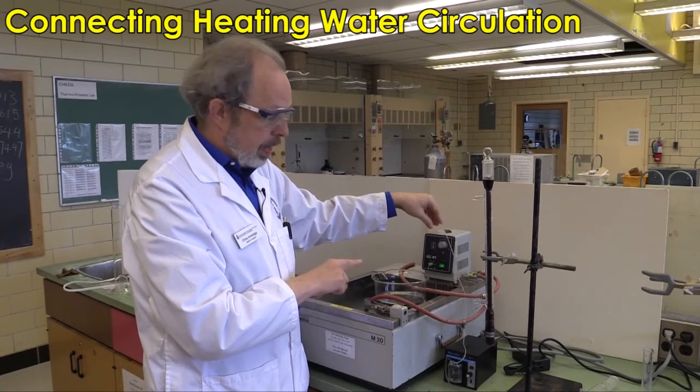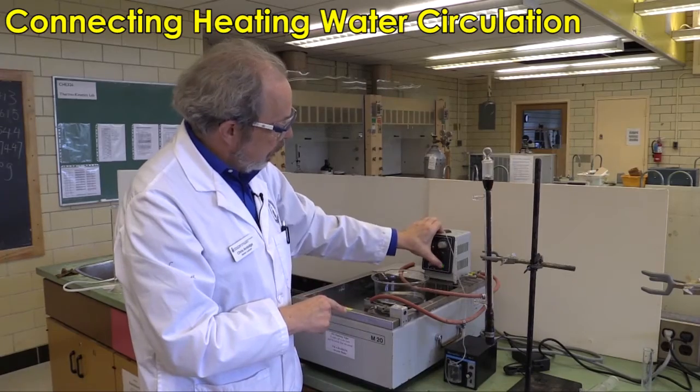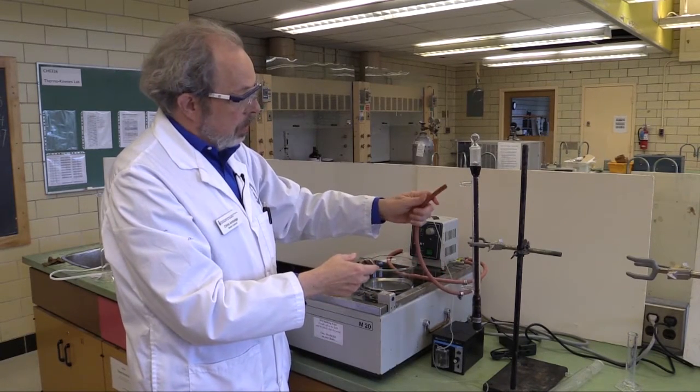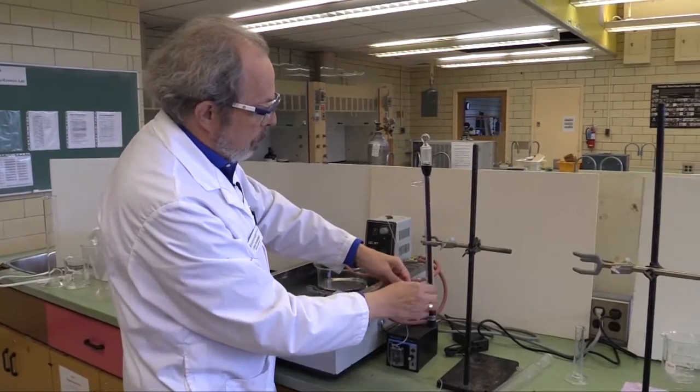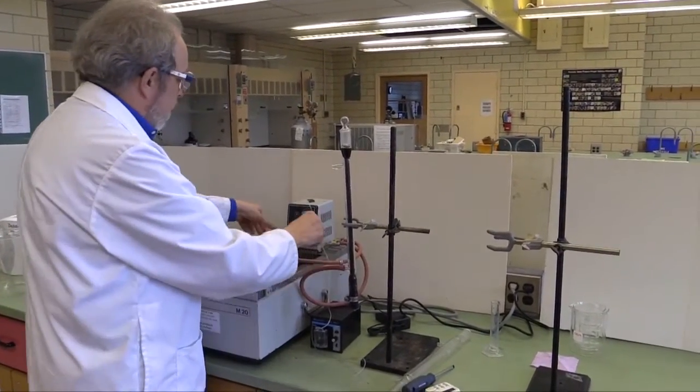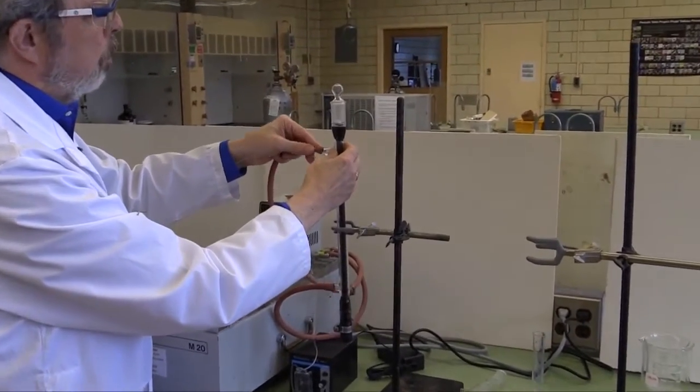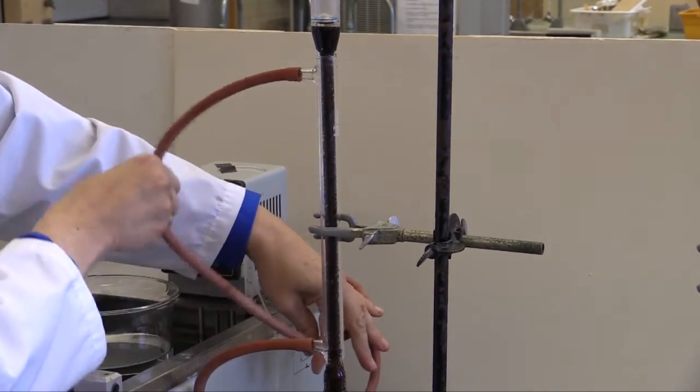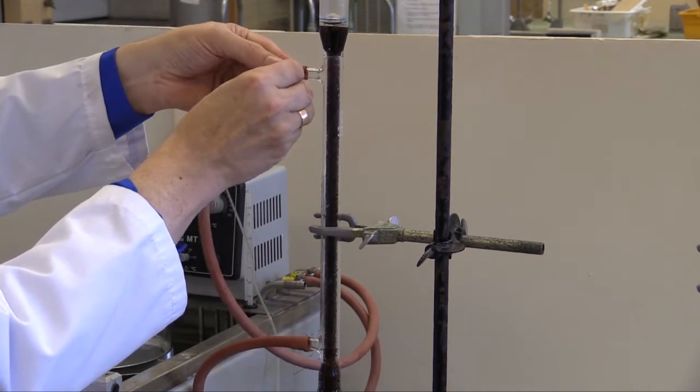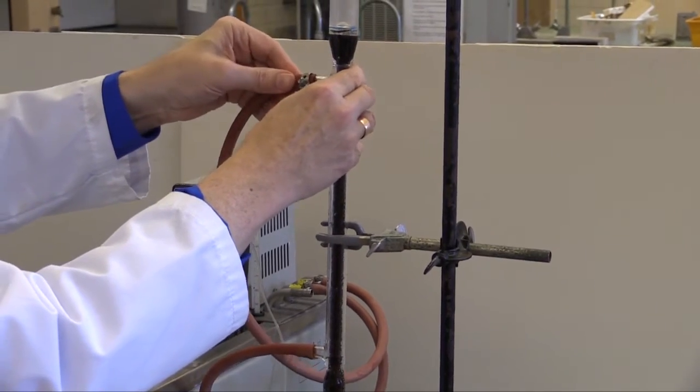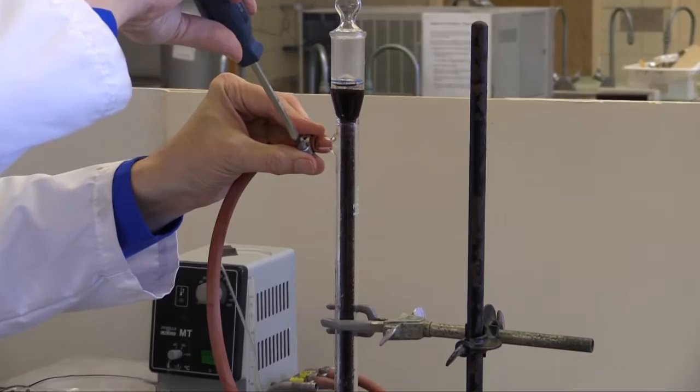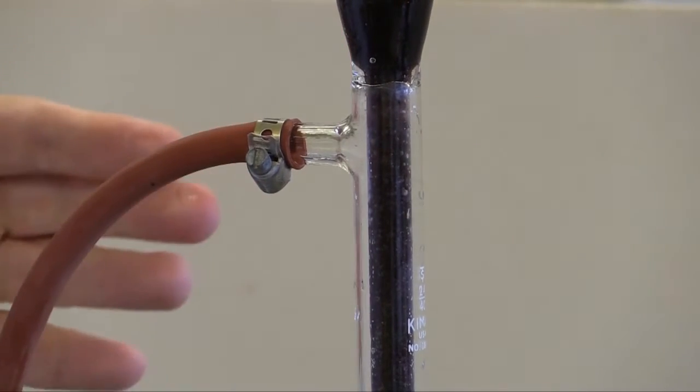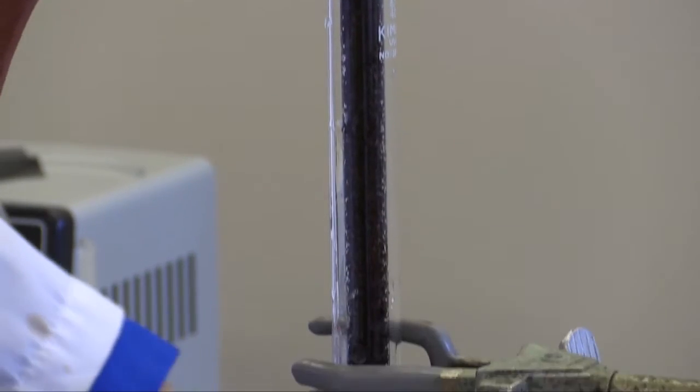Now we need first to connect the circulating water, and to do that you need to turn the hot water bath off for a bit, and one of these, you will have seen water flowing out. So you put the one that's flowing from the bath, connect it here, and the other one you connect to the top. Now to make sure that these don't pop off, they have got hose clamps on them. And you put that over the rubber tubing so that the glass is underneath.